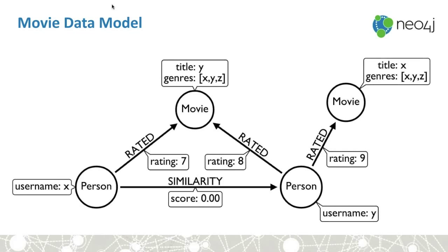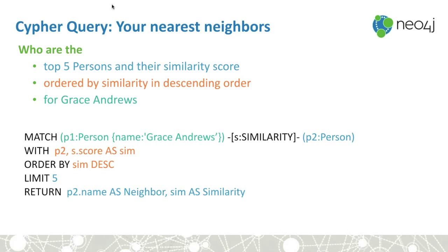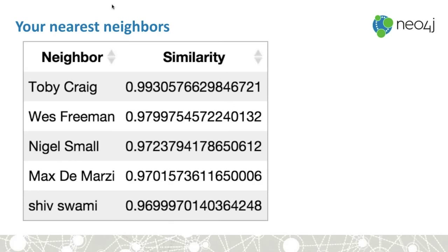Now what can we do with this? We can find people who are most similar to us. Let's see who are the top five people similar to Grace Andrews, scored by similarity. When we run this query, Toby and Grace are 99% equal — practically clones as far as movie taste. Then Wes and Nigel at 97%, and others. This is a way to find people with very similar taste, which we may want as part of our recommendation query.